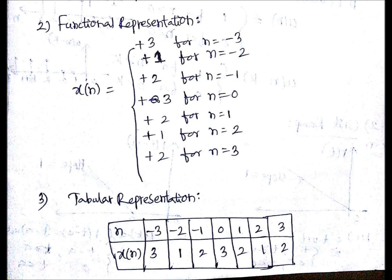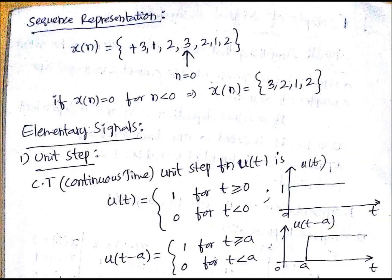The fourth one is sequence representation. Here you are going to represent that same figure in this way: x(n) equals flower brackets +3, 1, 2, 3, 2, 1, 2. You need to mention that arrow also, because if you don't mention arrow at any place, you don't know which is the starting position, that is which is the 0th step.